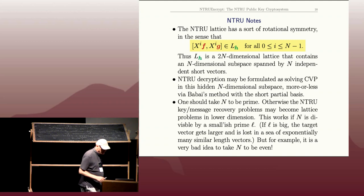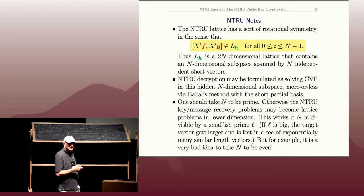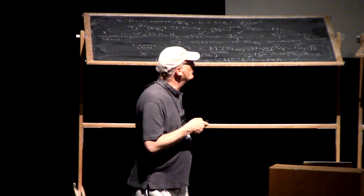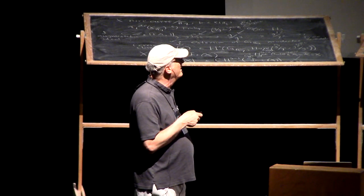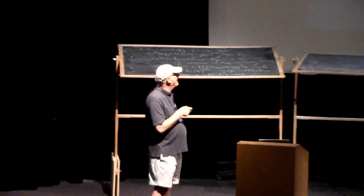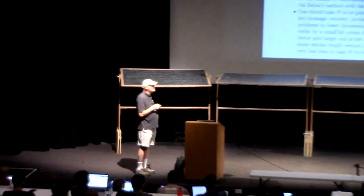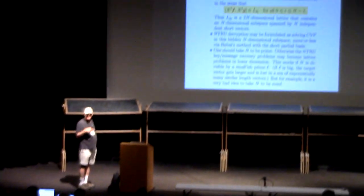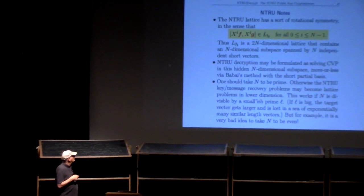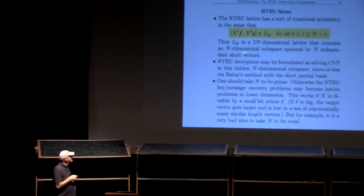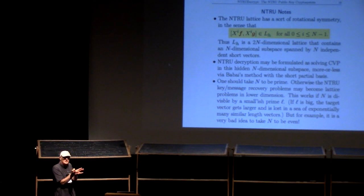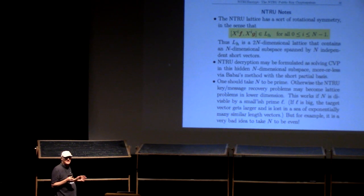Here are a few notes about NTRU. First, I said that the lattice contains the short vector (f,g). It actually contains a whole bunch of short vectors, because if you multiply the polynomials f and g by the same power of x, it'll still be in the lattice. So there's actually this n-dimensional subspace spanned by short vectors in this 2n-dimensional space.